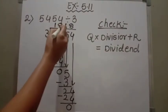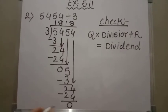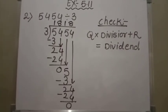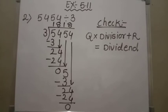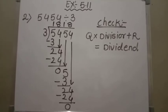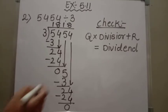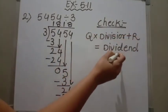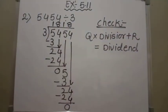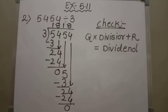So here the quotient is 1818 and remainder is 0. Now we are asked further to check the division. For checking we use the formula: quotient times divisor plus remainder equals dividend.